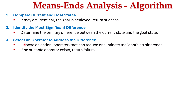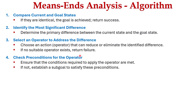In the third step, we select an operator to address the difference — that is, we choose an action or operator that can reduce the difference between the current state and goal state. If no suitable operator is found, we return failure. In the fourth step, we check the preconditions for the operator — we ensure that the conditions required to apply the operator are satisfied. If not satisfied, we establish a sub-goal to satisfy the precondition.